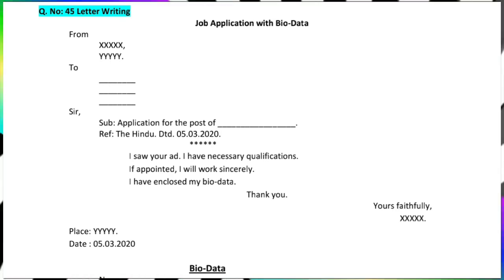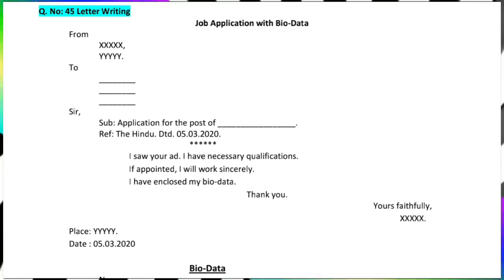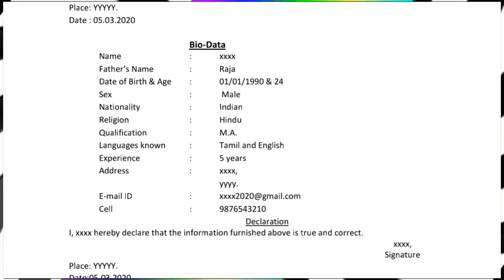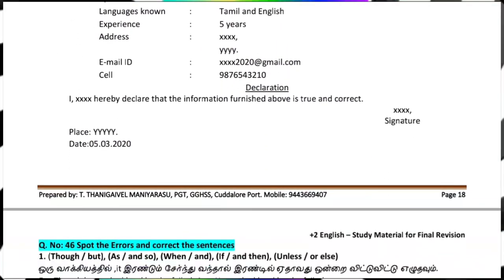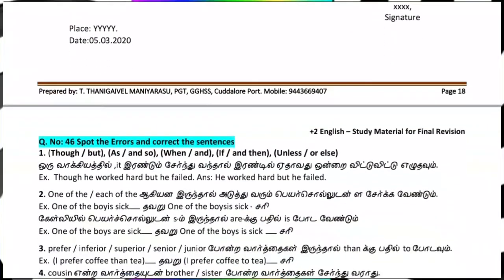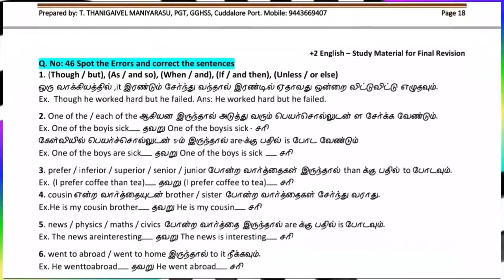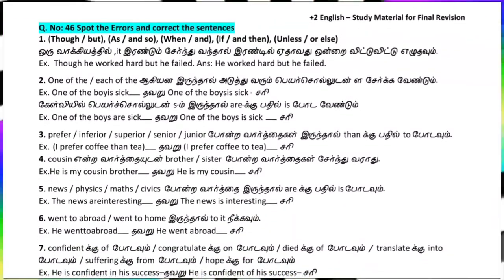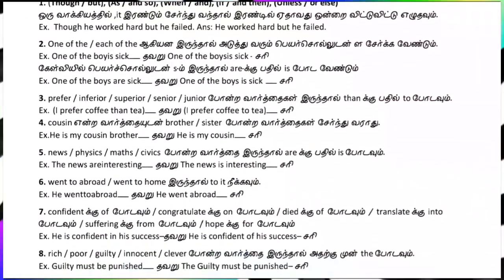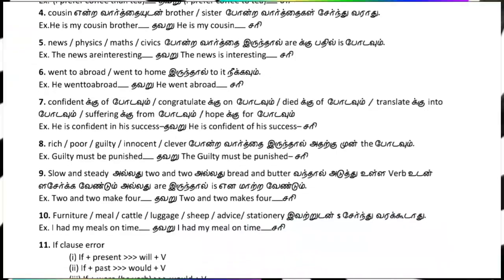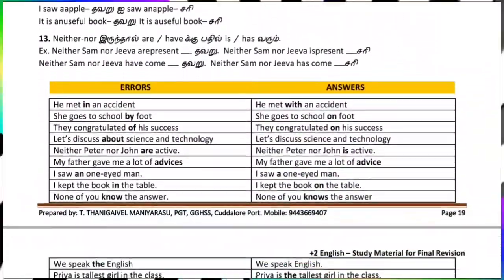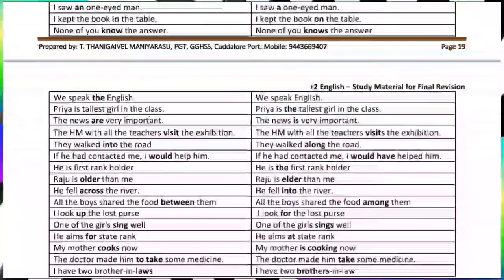Prose comprehension, poem comprehension, and story comprehension. Then prose paragraphs — 'Two Gentlemen of Verona,' Nicola and the two brothers. These are the key points. Also, supplementary paragraphs are important.